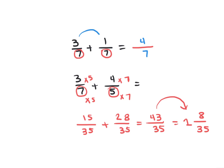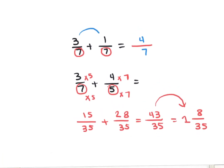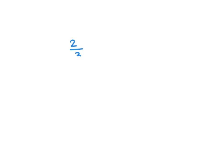This is how to add two fractions. The same method applies when we subtract. For example, 2 over 3 minus 1 over 4. Do you have the same denominator? No. How can you change to have the same denominator?